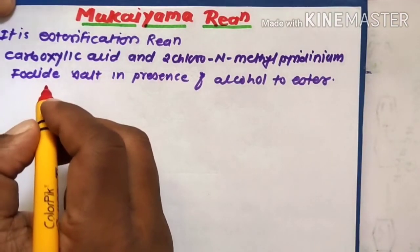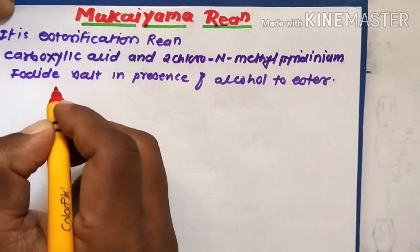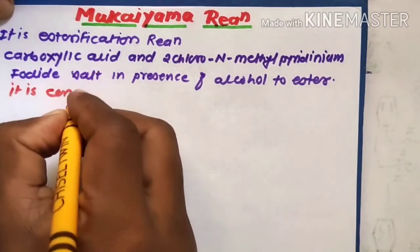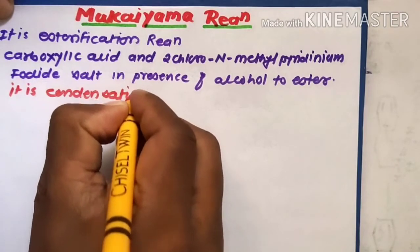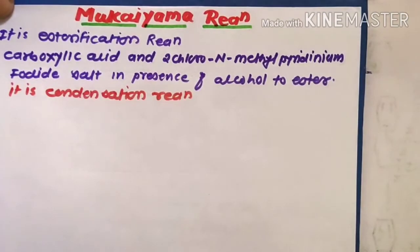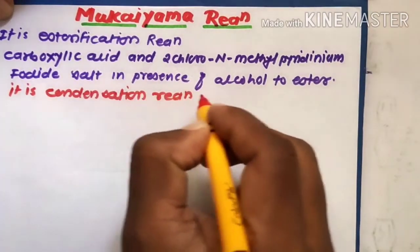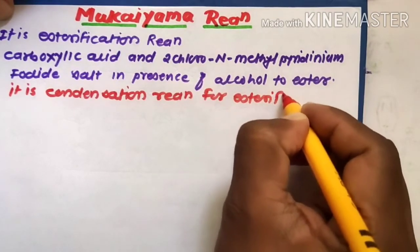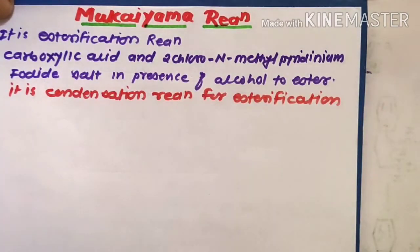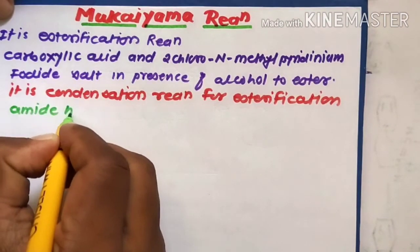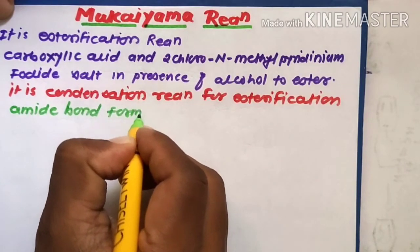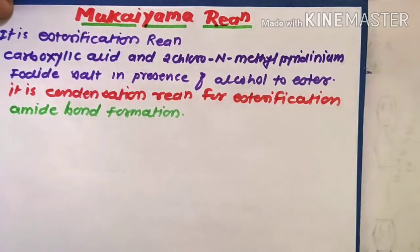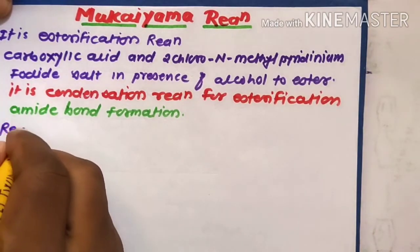The Mukaiyama reaction is used for condensation reactions — specifically for esterification and amide bond formation. These are the main applications of Mukaiyama reactions. This reagent can be used for both esterification as well as amide bond formation.